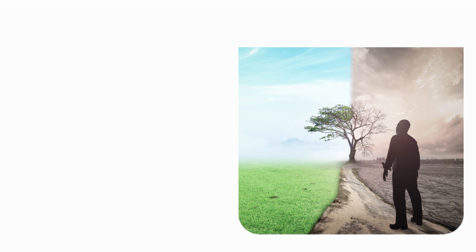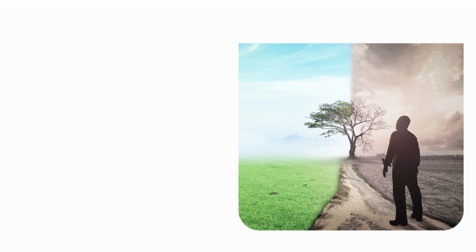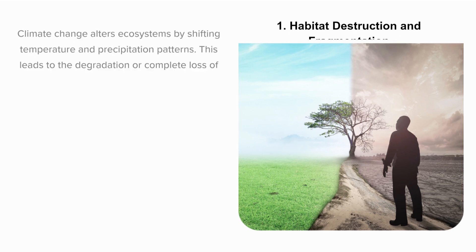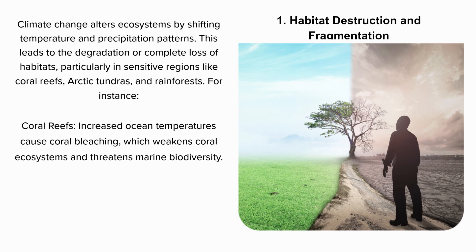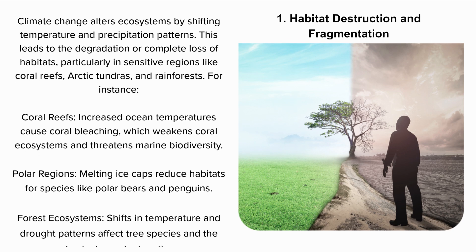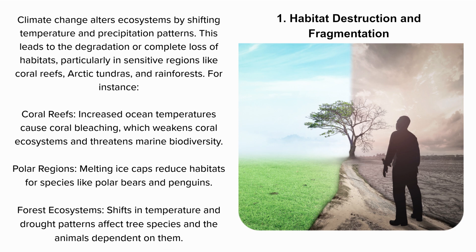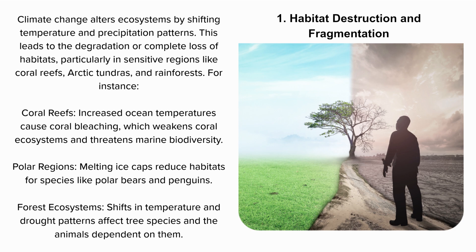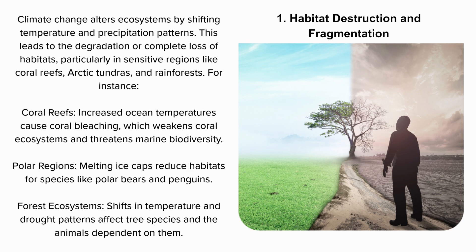1. Habitat destruction and fragmentation. Climate change alters ecosystems by shifting temperature and precipitation patterns. This leads to the degradation or complete loss of habitats, particularly in sensitive regions like coral reefs, arctic tundras, and rainforests.